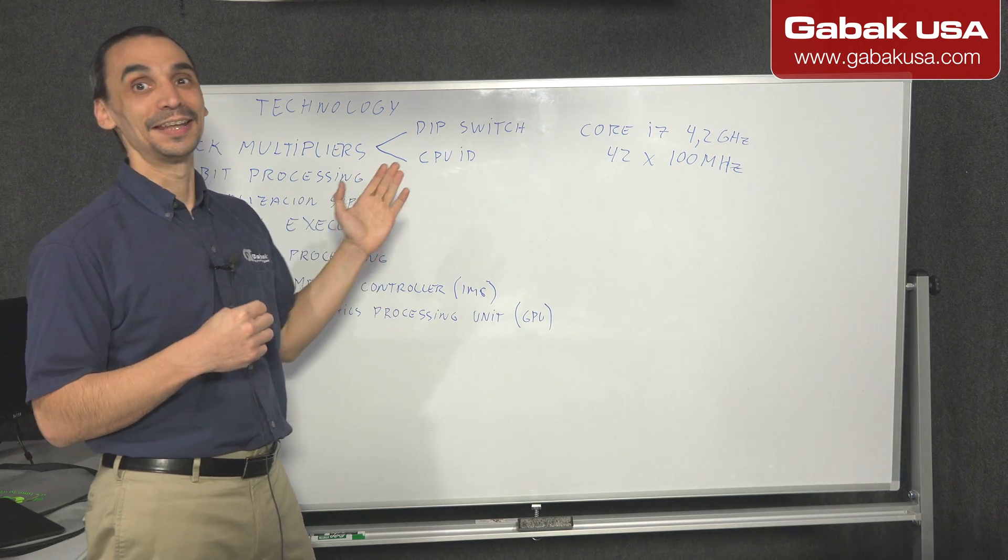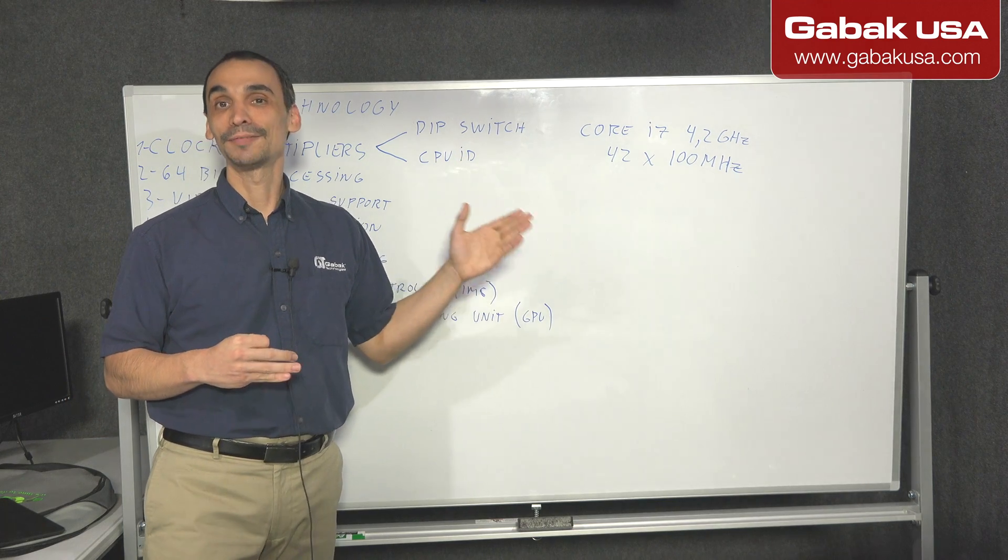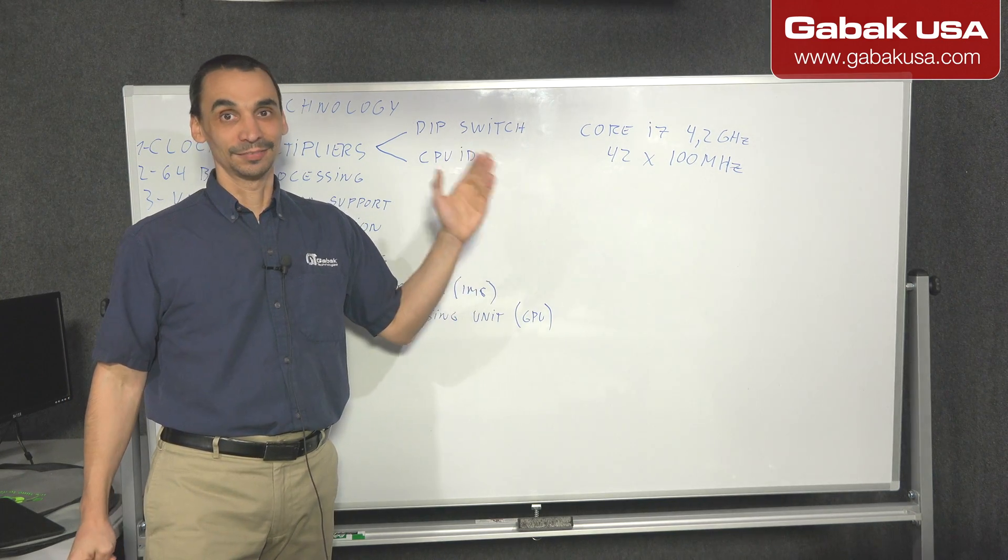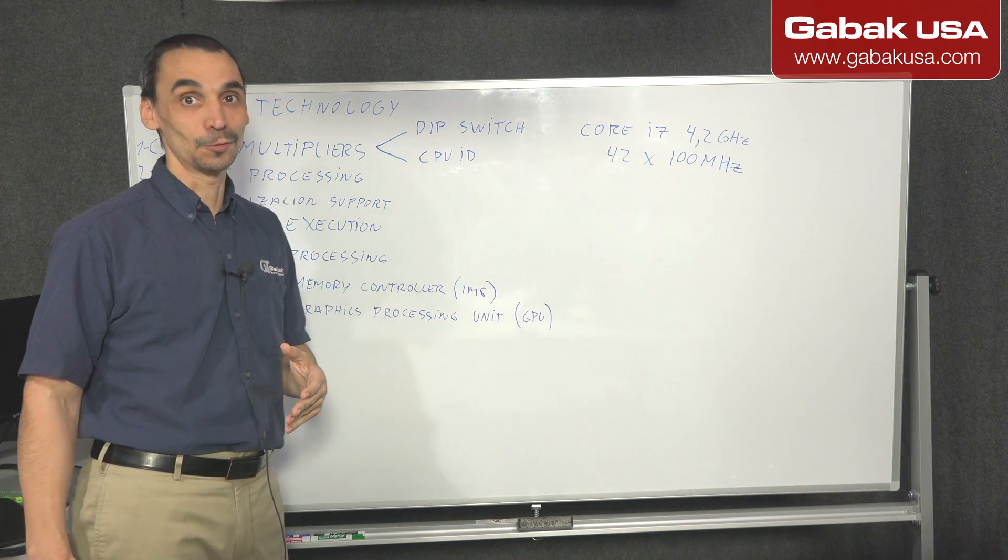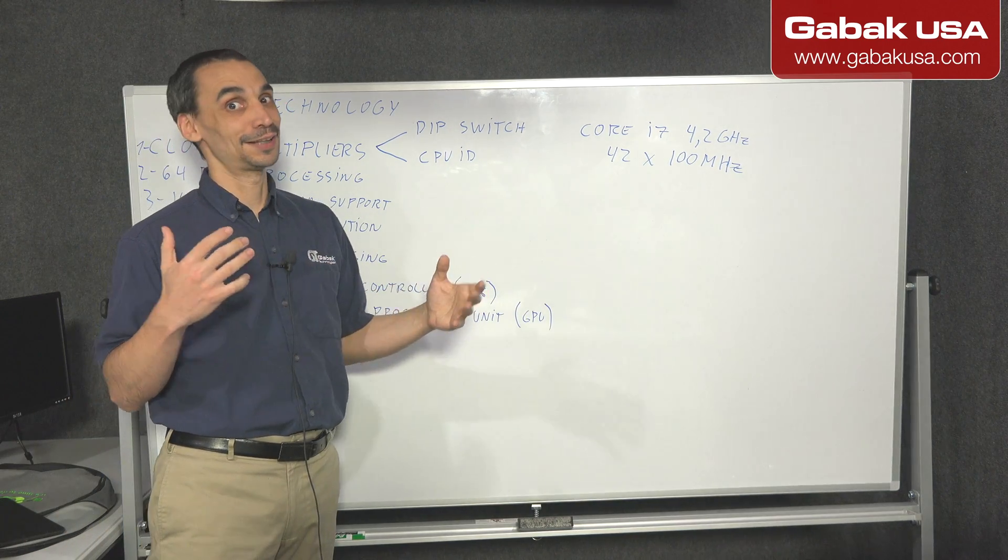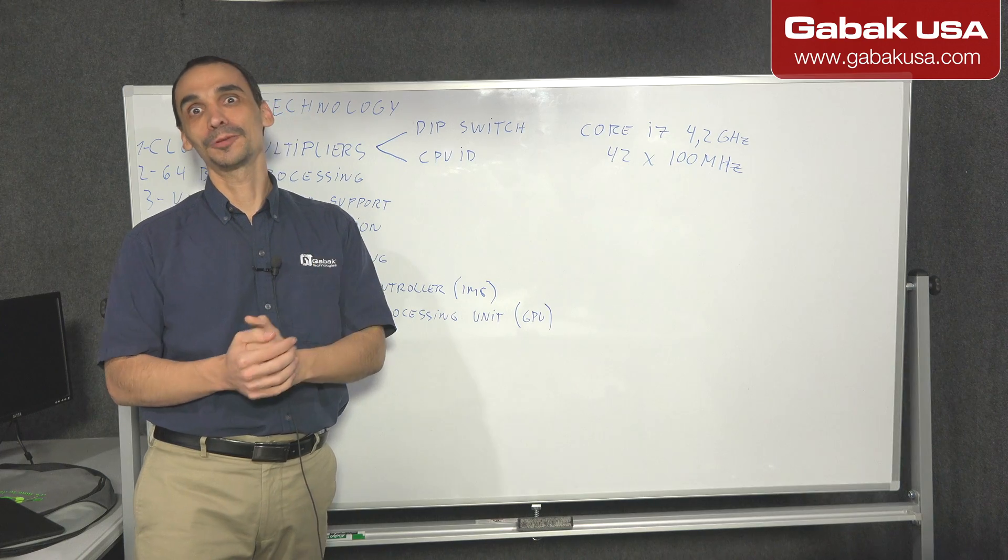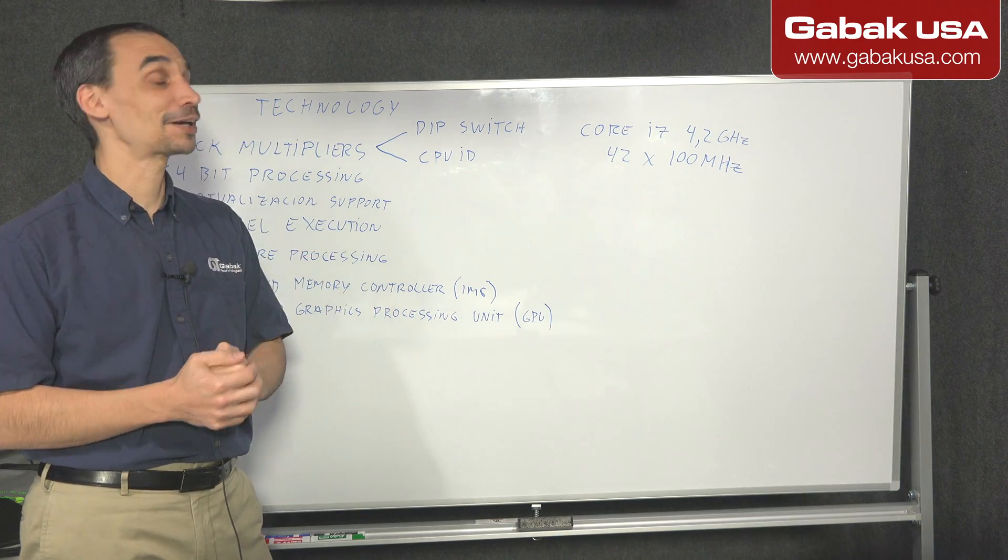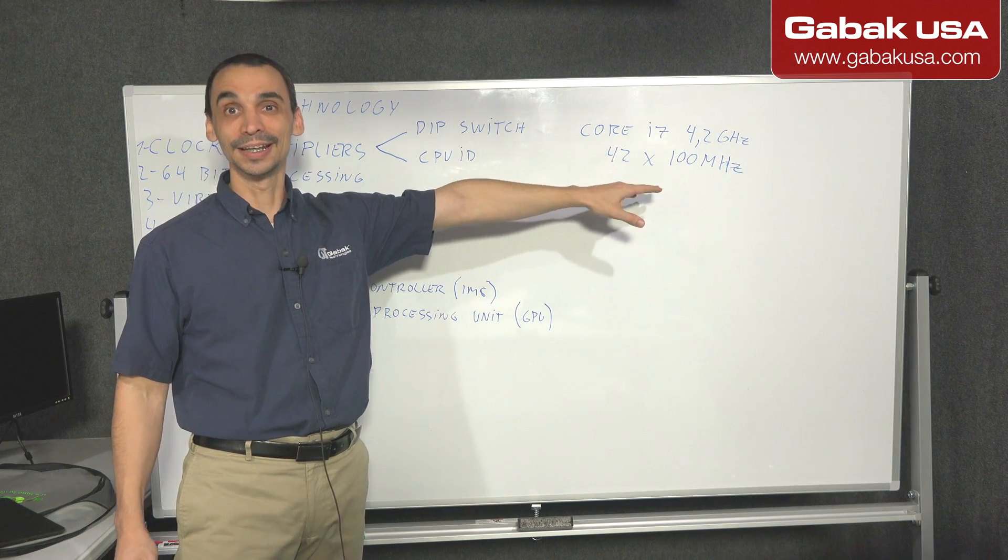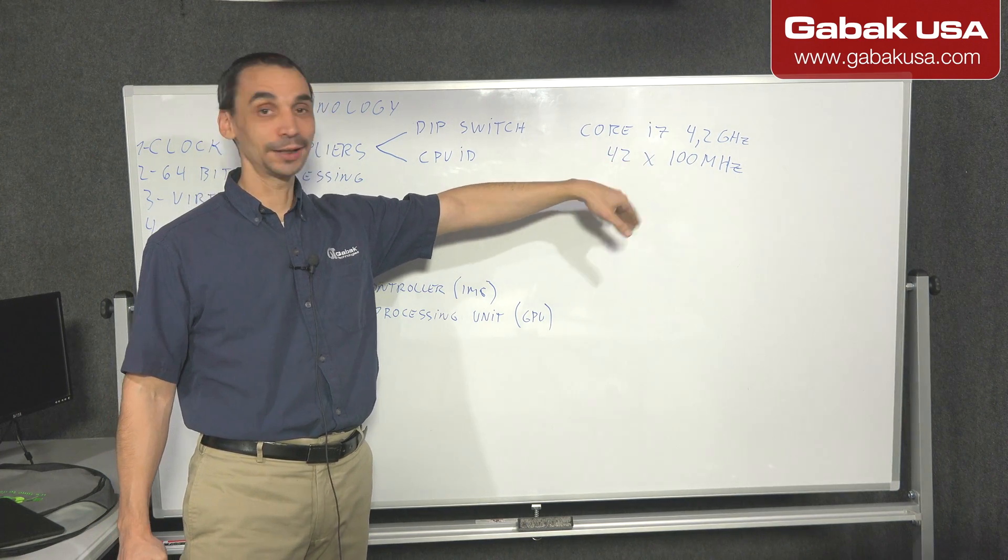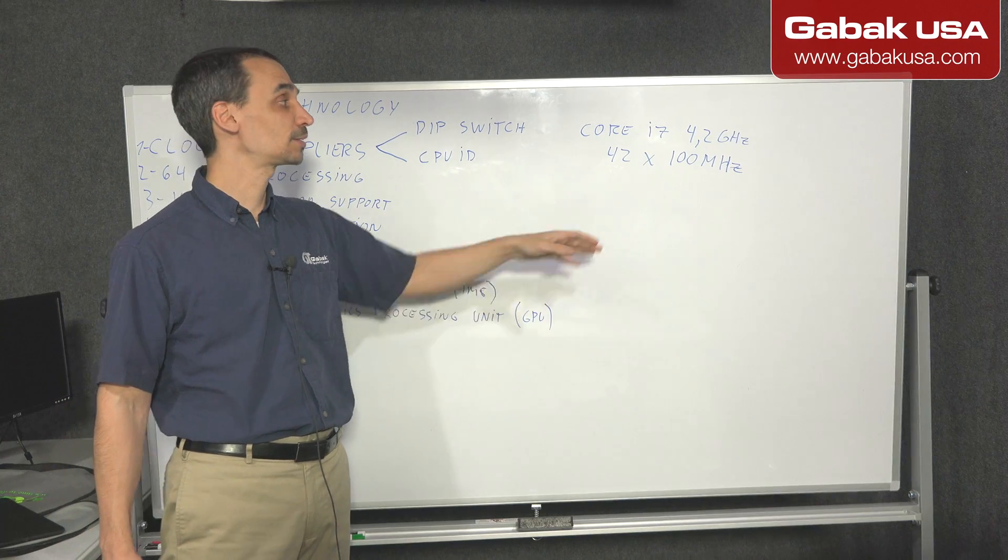Back in the day, the old CPUs, they used to have the same clock. The internal clock, it was the same one than the external one. But the manufacturer started thinking, well, we have to make it faster and faster and faster. They start creating the multiplier, so that way, the CPU can run much faster.